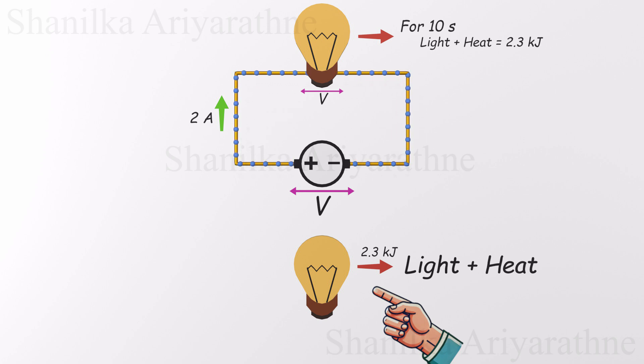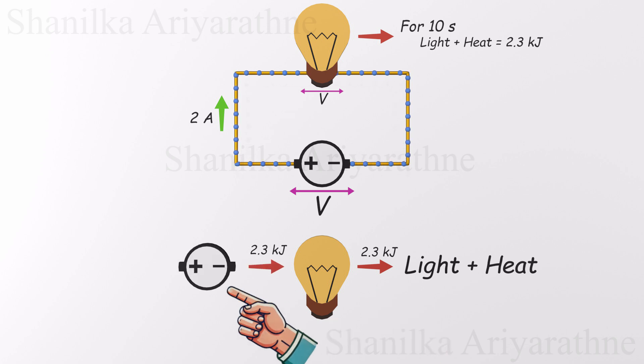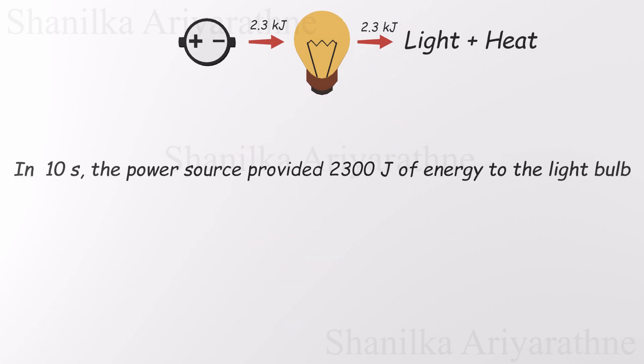That energy had to come from somewhere, and it came from the voltage source doing 2.3 kilojoules of work to move the charges through the circuit. Over those 10 seconds, the power source delivered exactly 2,300 joules of energy to the bulb. And the bulb didn't waste a bit of it. All that energy was turned into light and heat, just as expected.